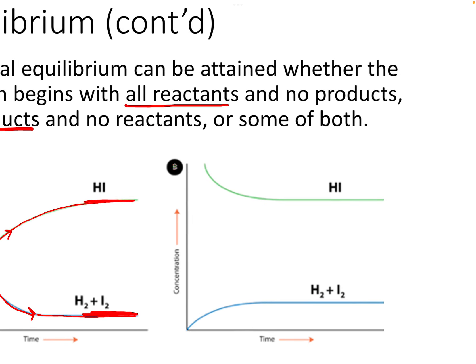We could also look at another scenario — let's say we start with all product and no reactant. So we're just going to start with hydroiodic acid. The concentration is going to start to decrease as it decomposes into hydrogen and iodine. That means the concentration of hydrogen and iodine will start to increase. Then we're going to get this back and forth between the forward reaction and the reverse reaction until finally the concentrations stop changing.